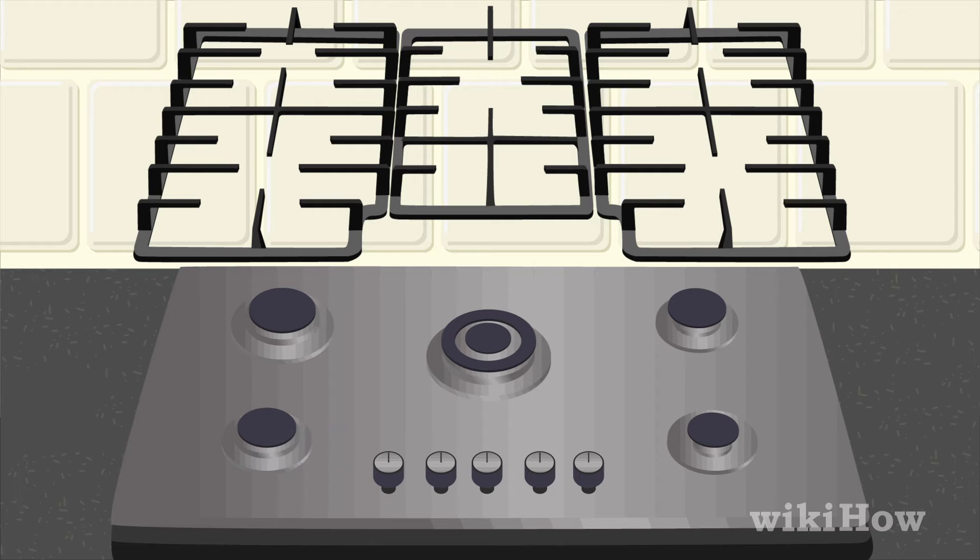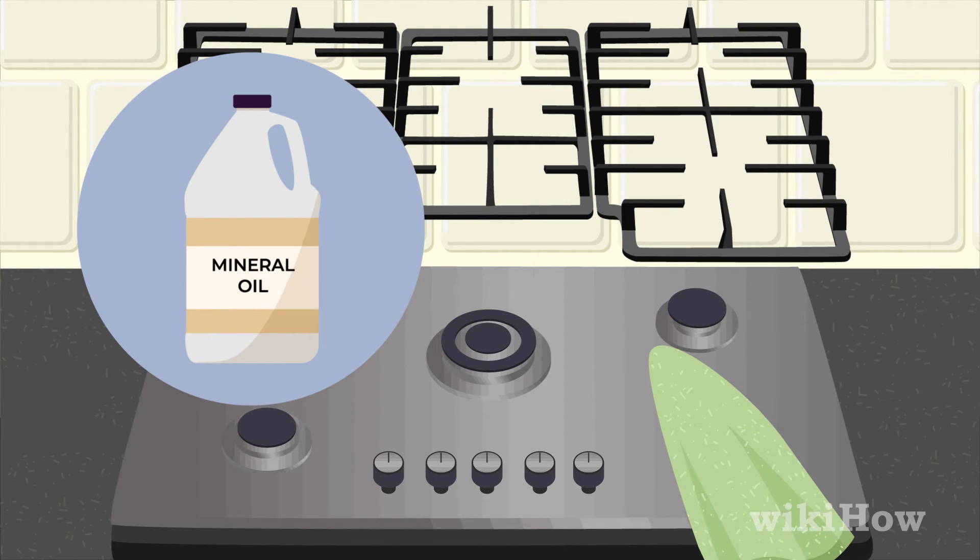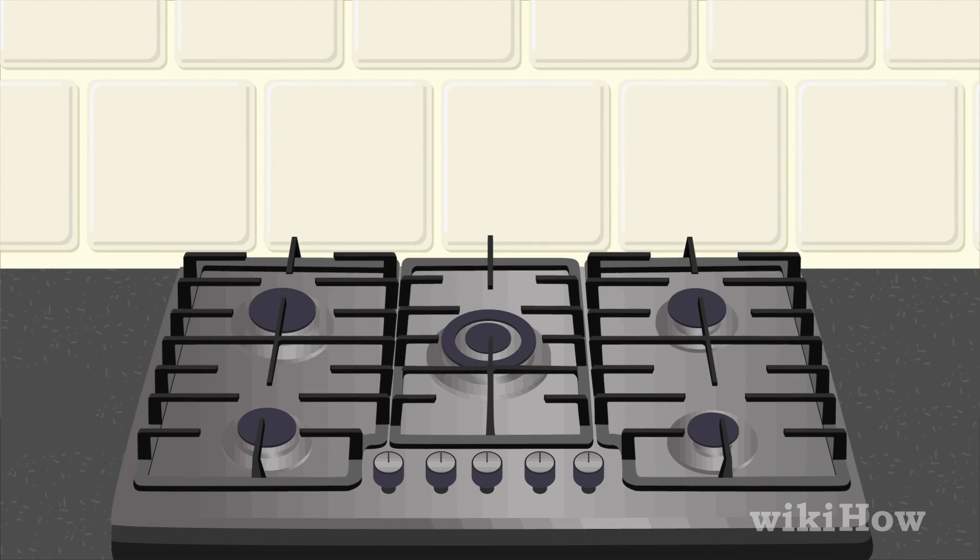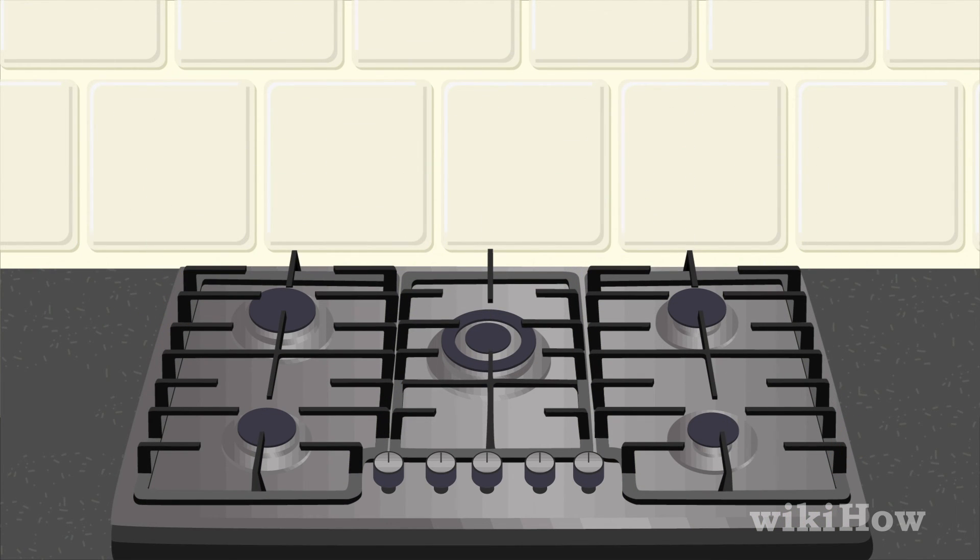Finally, dip a soft cloth in mineral oil and use it to wipe your stove in the direction of the grain. This will give it a polished shine and remove streaks.